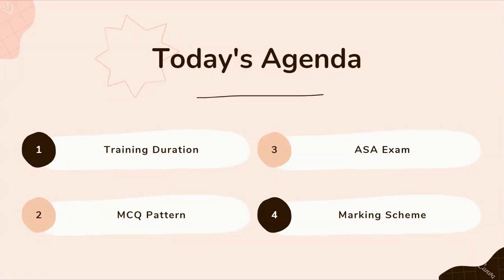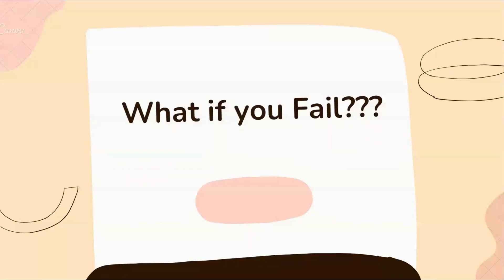To recap the marking scheme: for six-month training, MCQs are 20 questions for 20 marks; for two-month training, it's 40 questions for 40 marks. For the ASA exam, 10 questions carry 10 marks for the MCQ portion, and 10 marks are in the hands of the instructor taking your viva. You have to score well in both parts.